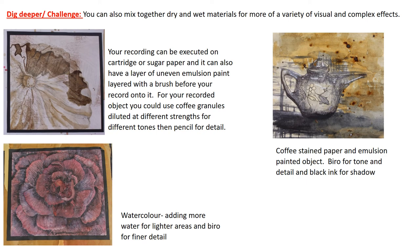You may want to use coffee-stained paper, like the teapot recording on the right-hand side, using coffee-stained paper and emulsion to paint the actual object, biro or ink for tone, and then biro for detail and black ink for shadow. These techniques and materials are similar to the process you used when you recorded your skull drawing at the beginning of year 12 in your natural forms project, so you might want to pursue that approach again.